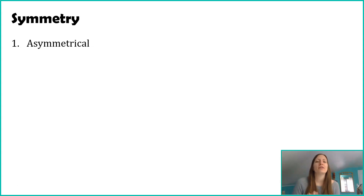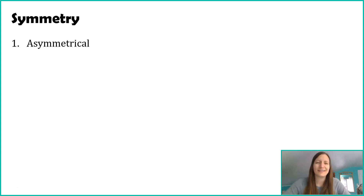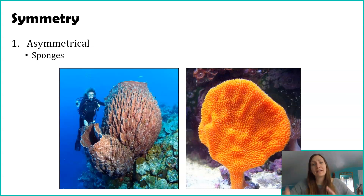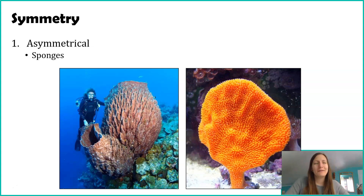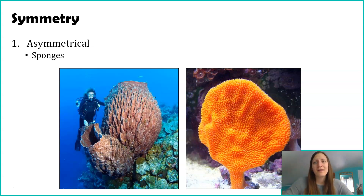Another way we can classify organisms is by the symmetry they have — as simply as going back to grade school when things are symmetrical. There are actually three different types of symmetry, though you could argue this first one, asymmetry, isn't really symmetry at all, because asymmetry means not symmetrical. The only animals in the animal kingdom that are asymmetrical are sponges. Some sponges are more symmetrical than others, but there's no rhyme or reason to it. Sponges just kind of grow and do their own thing — this is our only example in the animal kingdom that actually lacks any kind of symmetry.